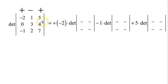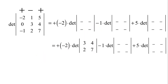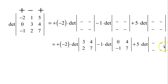For 4 times its minor: cross out the row, cross out the column — we get [3, 4; 2, 7]. For minus 1: cross out the column, cross out the row — we get [0, 4; -1, 7]. And for the 5: cross out the column, cross out the row — we get [0, 3; -1, 2].